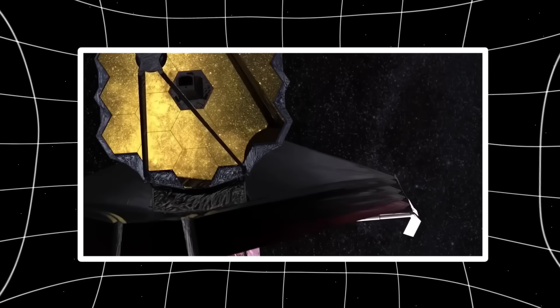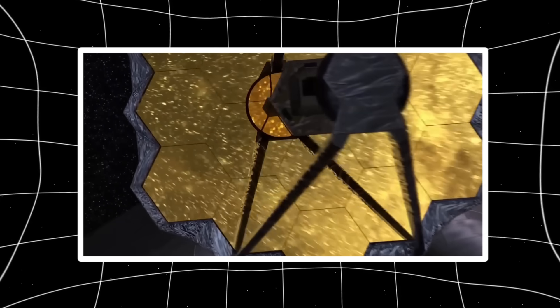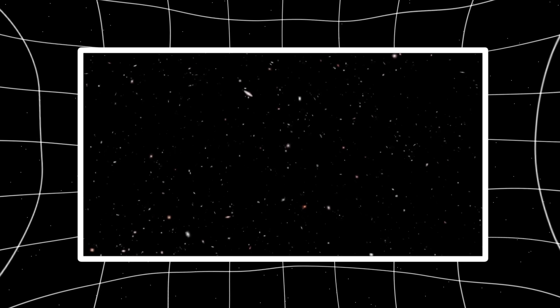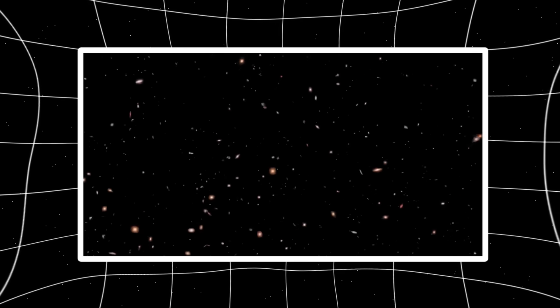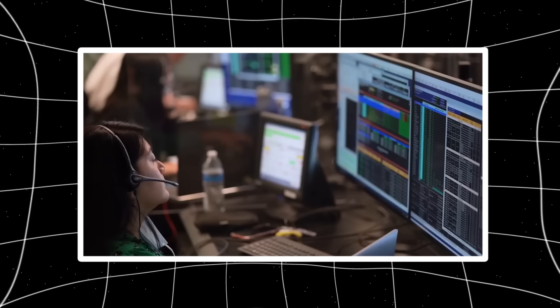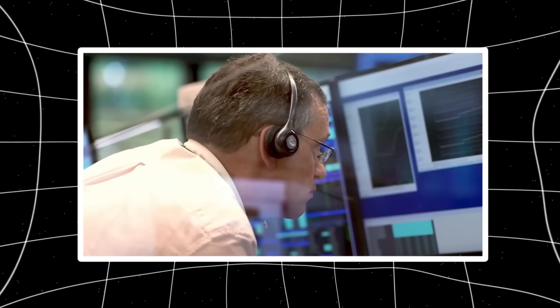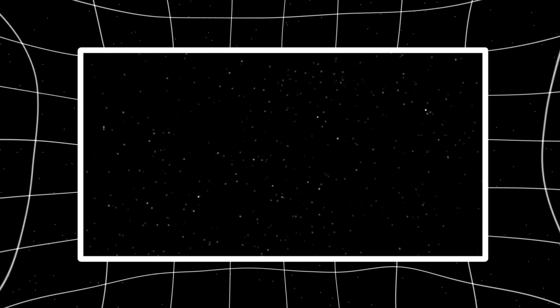So now we stand at a threshold, a precipice of understanding, where every new image from the James Webb Space Telescope is like a whisper from the universe itself. What we thought we knew about the cosmos is dissolving. Time may not be linear. The Big Bang may not have been the beginning. Planets are forming in ways no one predicted. Entire zones of space appear deliberately erased, and